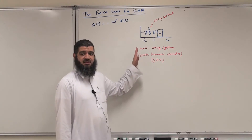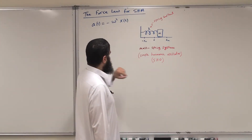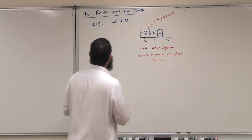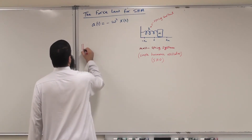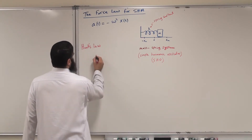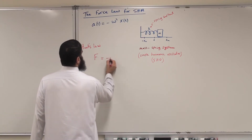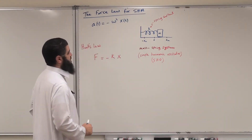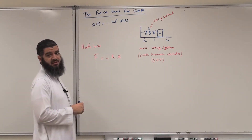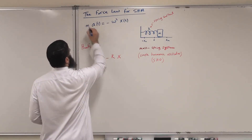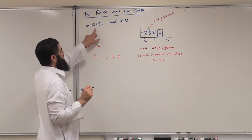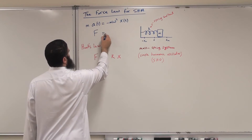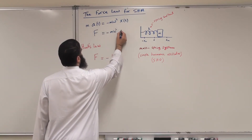We have seen in the previous chapters, when we talked about energy and energy conservation, Hooke's law. What is the force exerted by the spring on this mass? Hooke's law says that F equals minus kx. Let us use this equation and multiply both sides by mass. So I have MA equals minus M omega squared x of t. MA is just the force F, so F equals minus M omega squared x of t.